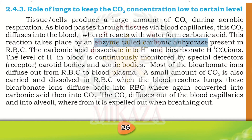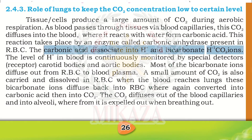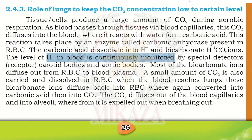The level of H⁺ positive ions in the blood is continuously monitored by special detectors called receptors — specifically carotid bodies and aortic bodies. Carbonic acid produces hydrogen ions and hydrogen carbonate ions, and these hydrogen ions are monitored and controlled by these receptors.